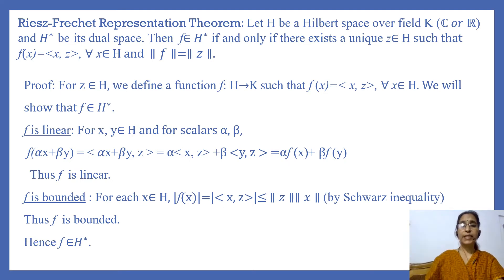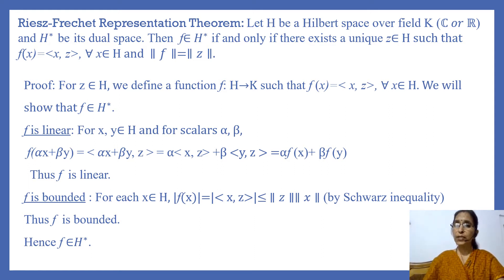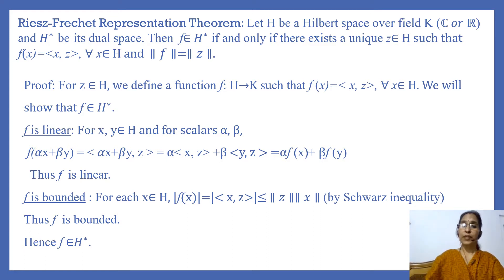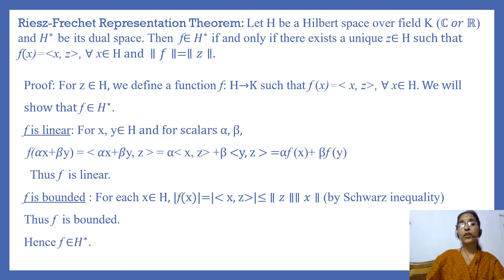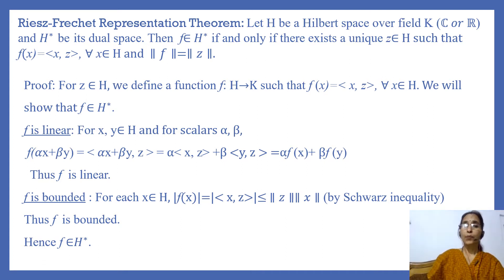This theorem states that let H be a Hilbert space over field K, where field K is either the field of complex numbers or field of real numbers, and H star is its dual space. H star is the set of all bounded linear functionals on H — that is, if F belongs to H star, then F is a bounded linear functional from H to the field of scalars K.